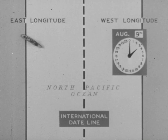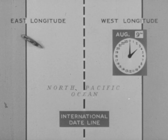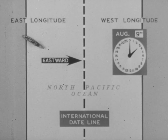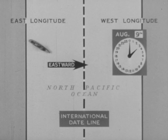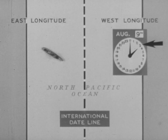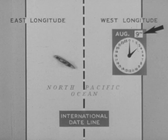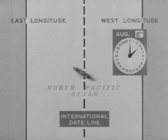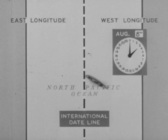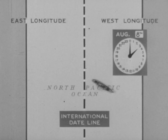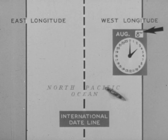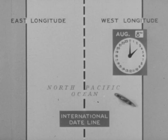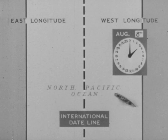This change of date can be very well illustrated by the use of this ship. Observe as it steams eastward: the time is 0300 and the date is the 9th. As it crosses the line, the time of day remains the same, but the date becomes one day earlier, and it is 0300 on August 8th.